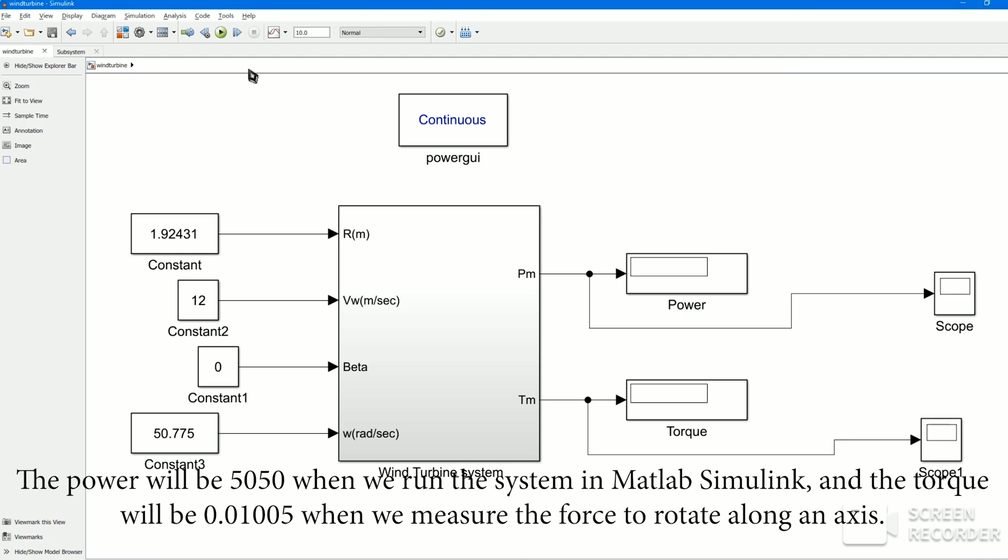The power will be 5050 when we run the system in MATLAB Simulink, and the torque will be 0.01005 when we measure the force to rotate along an axis.